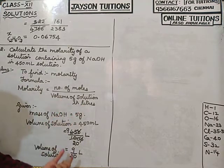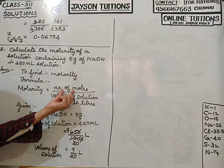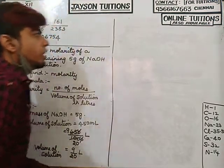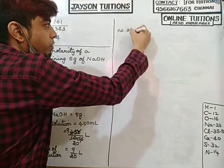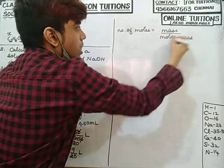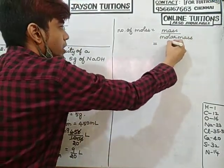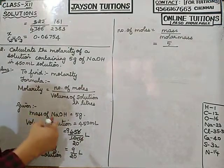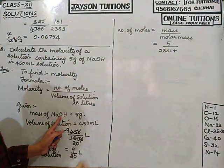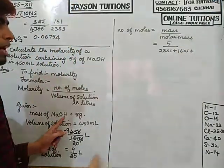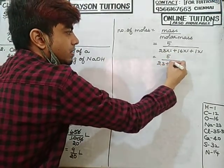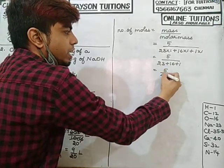Now I need the number of moles, which is not given directly. Using the formula: number of moles = mass ÷ molar mass. Mass of NaOH = 5 grams. Molar mass of NaOH: sodium = 23 × 1, oxygen = 16 × 1, hydrogen = 1 × 1, giving 5 ÷ (23 + 16 + 1) = 5 ÷ 40.